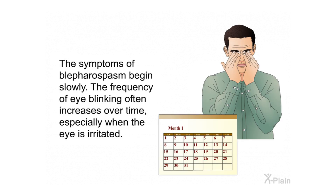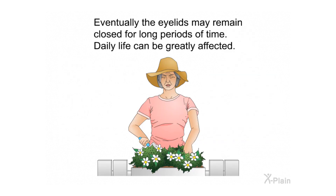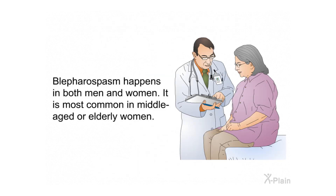The symptoms of blepharospasm begin slowly. The frequency of eye blinking often increases over time, especially when the eye is irritated. Eventually the eyelids may remain closed for long periods of time, and daily life can be greatly affected.